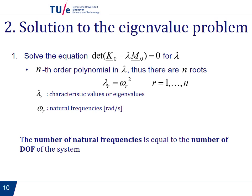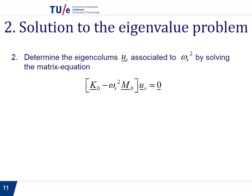Once we have found the ω_r, the next step is to determine the eigencolumns. In order to find u_r, we substitute ω_r in the expression of the generalized eigenvalue problem and solve for u_r.